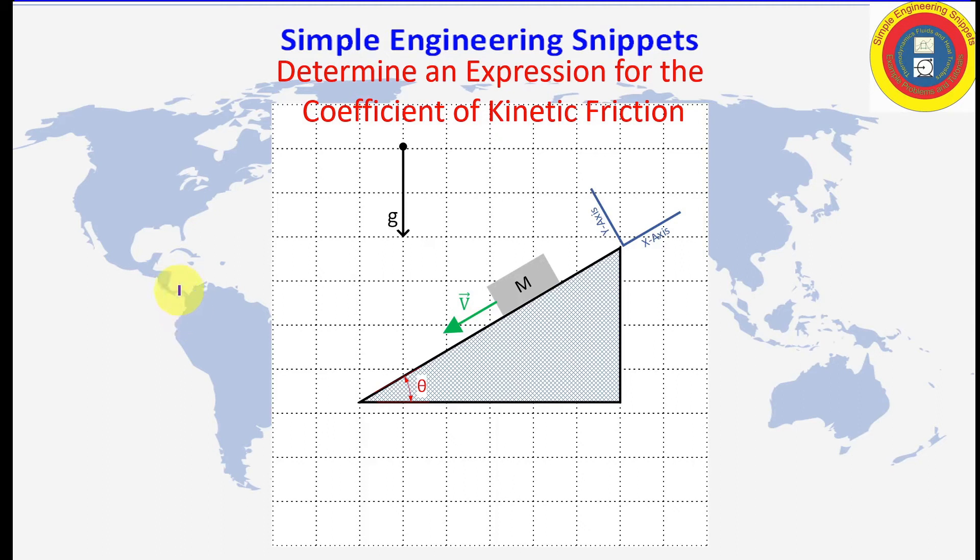Welcome to another Simple Engineering Snippet. In this instructional video, we will determine the expression for the coefficient of kinetic friction for the case where we have a block of mass m sliding down a ramp at constant velocity. I hope you find it useful.